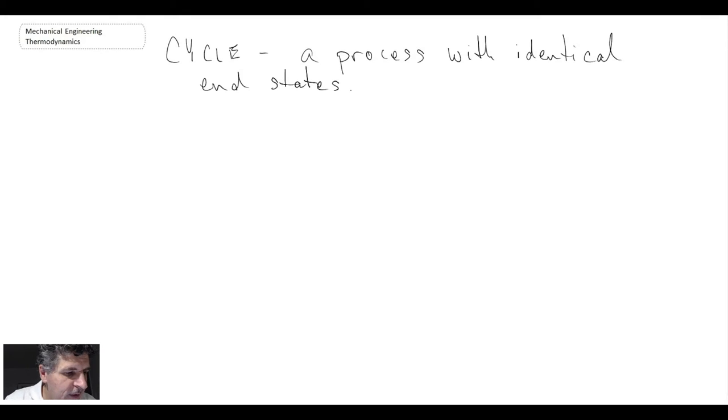So drawing that in terms of a process diagram, remember we looked at a PV diagram earlier. So here you might have state one and state two and before we talked about a process path that would be going like that.